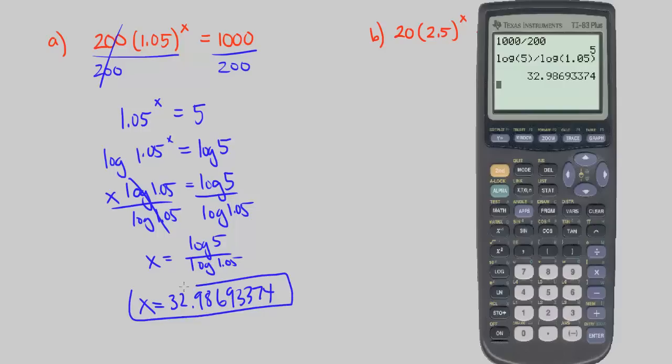And you get x equals 32.98693374. It's good not to round too much because logarithms we know grow at interesting rates. Anyway, let's go on to part b.